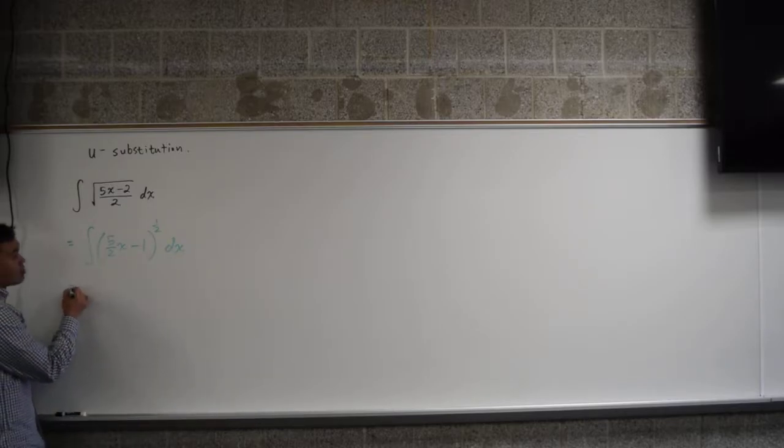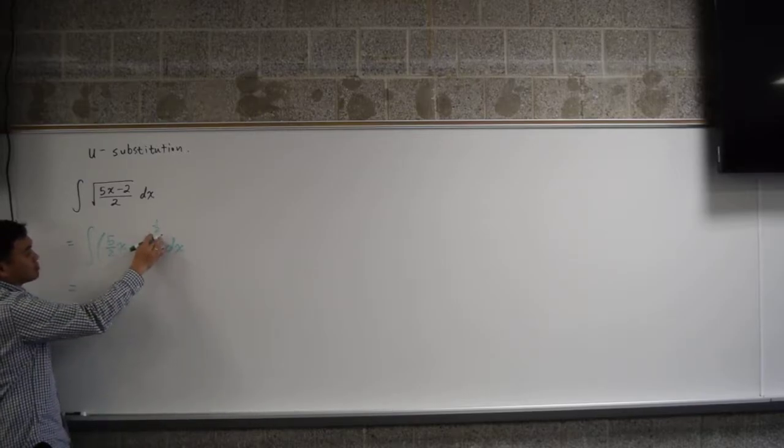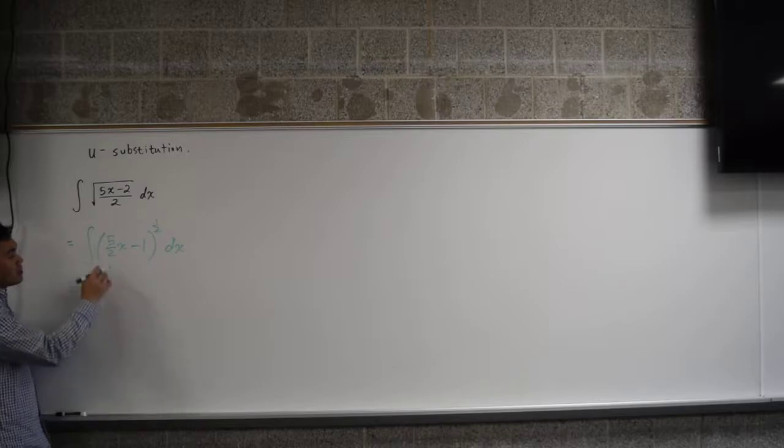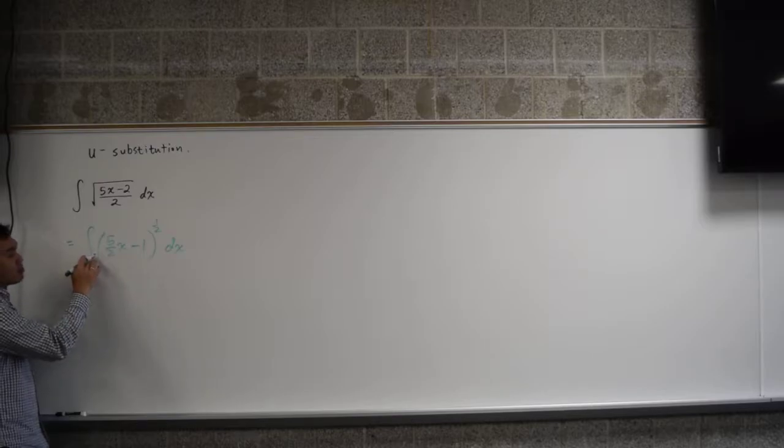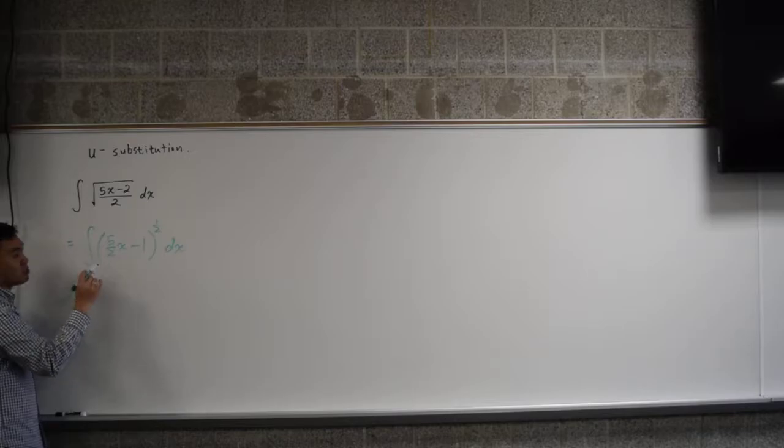I know how to integrate something that has 1 half on top. The thing is, 5 over 2x minus 1 is nested inside, so I better have the artifact of the chain rule if I want to undo this chain rule. If I want to consider this thing inside as like u, I better have the artifact of the chain rule.